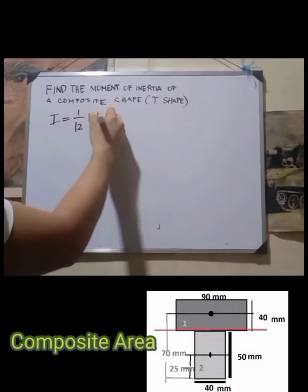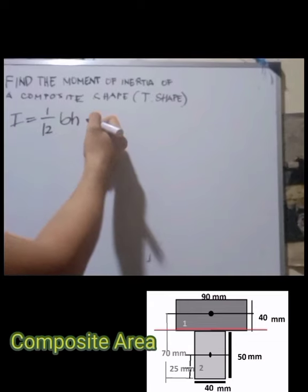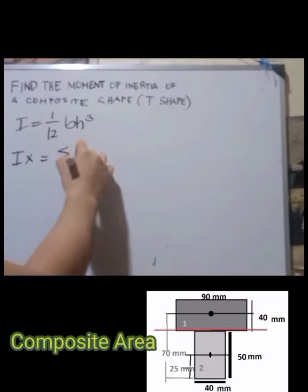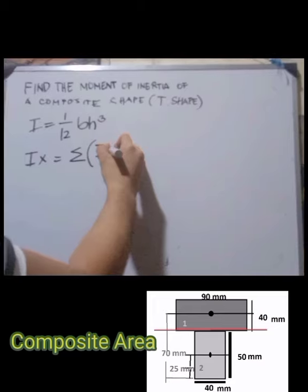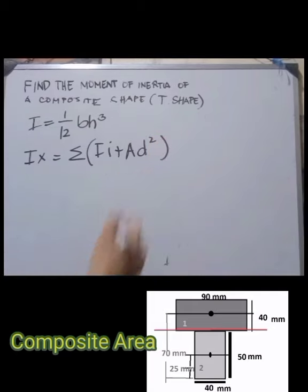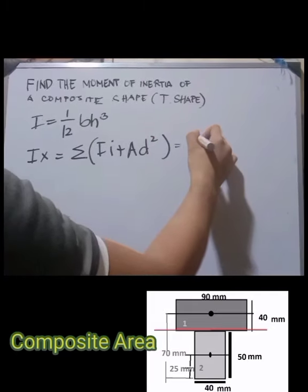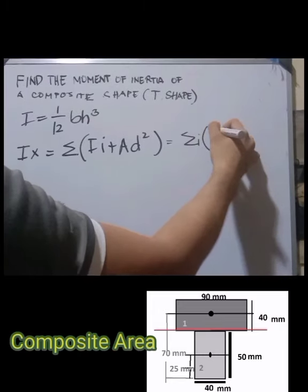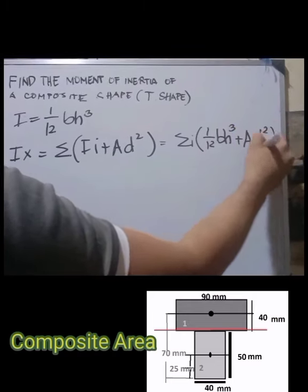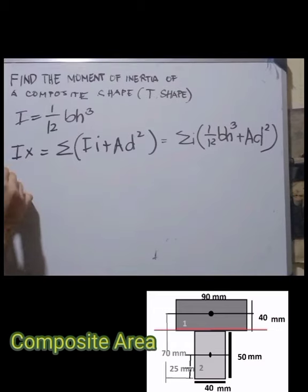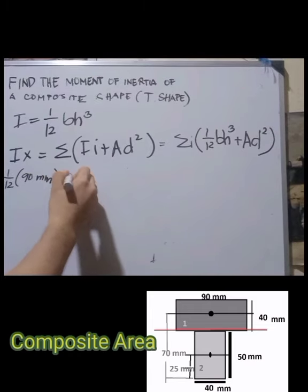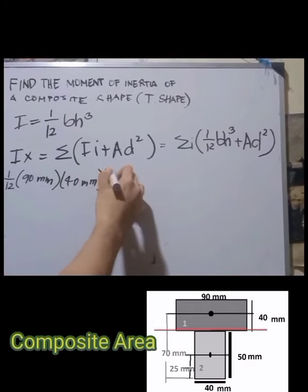Now we put everything into the equation: Ix = (1/12) bh³ + Ad². Applying the formula for the first rectangle: (1/12) × 90 mm × 40 mm³ + 90 mm × 40 mm × 16².